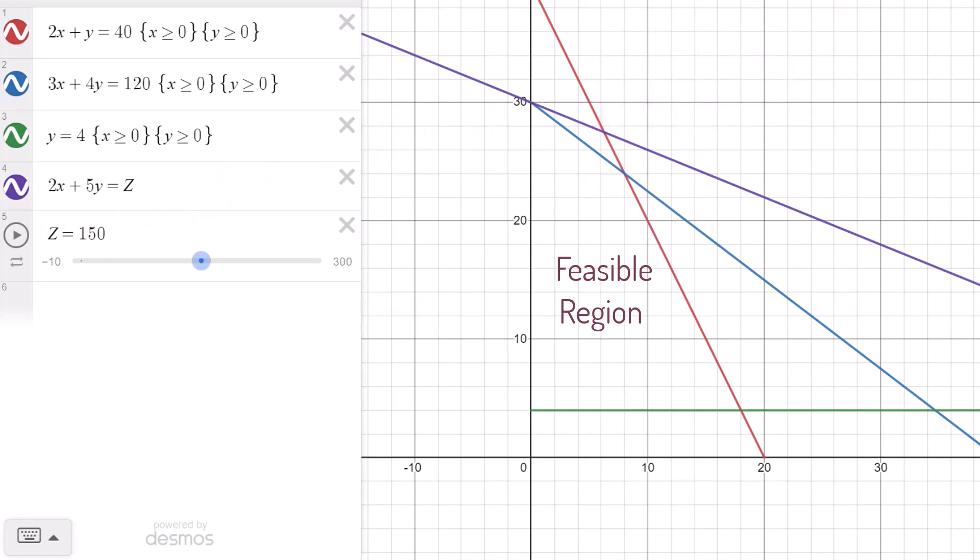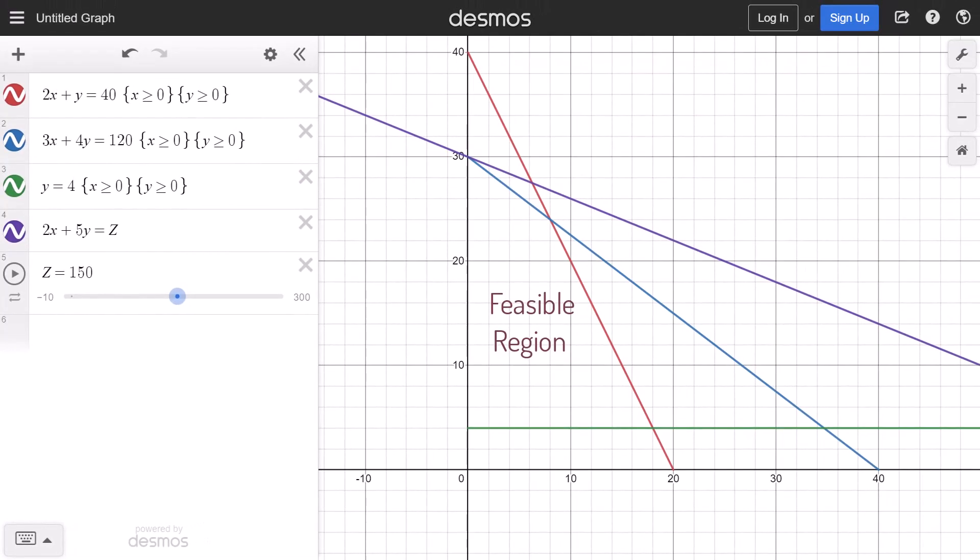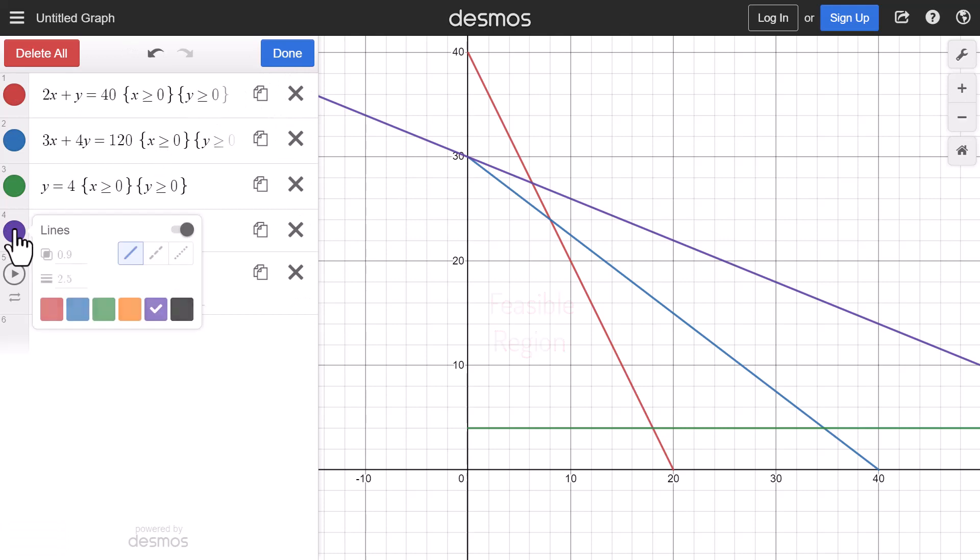We usually draw the objective function line as dotted line to distinguish it from the constraint lines. So I'm going to click the settings icon here, click the objective function circle and select dotted line. I can also change the color by choosing any of the options here. I'm going to put it back in purple and click done.